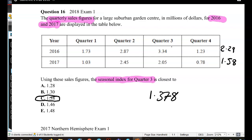Using those, find a seasonal index for quarter 3 in 2016, a seasonal index for quarter 3 in 2017. Then using those two figures, average them out to get you the overall seasonal index.